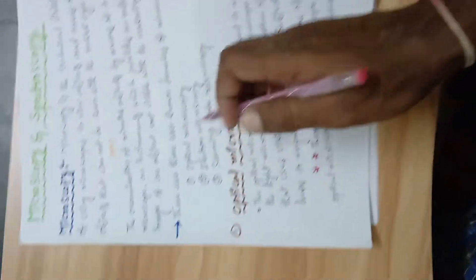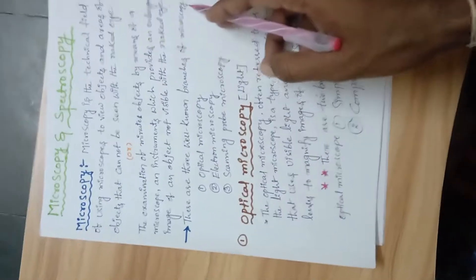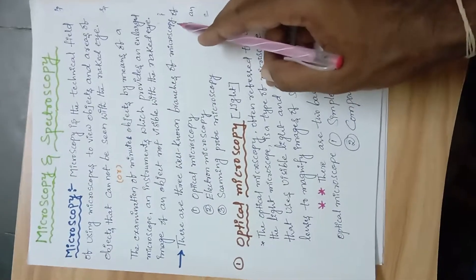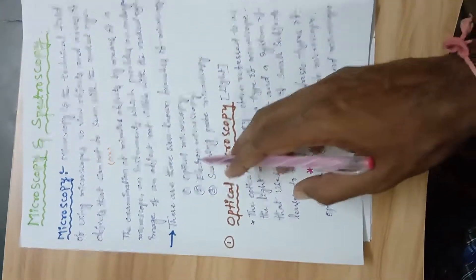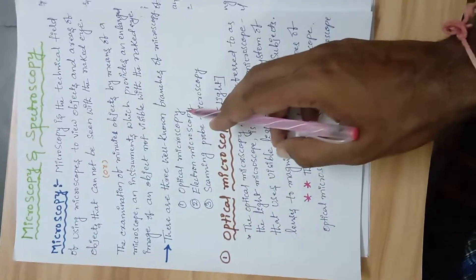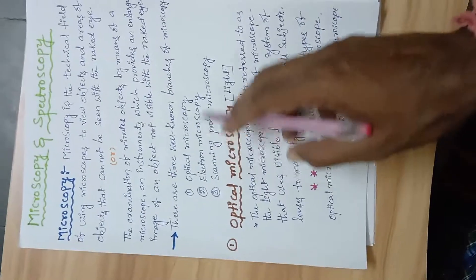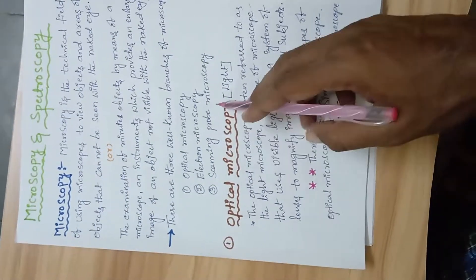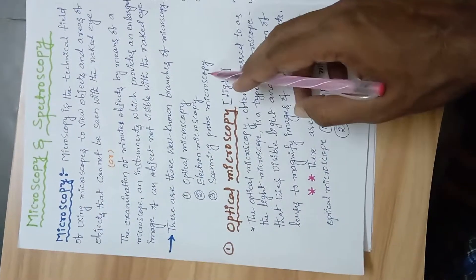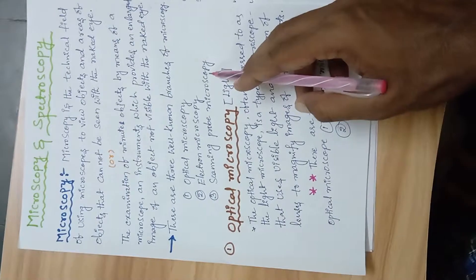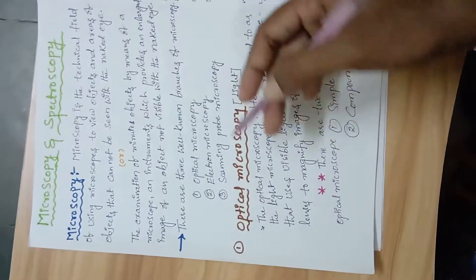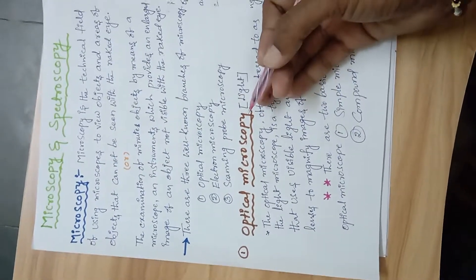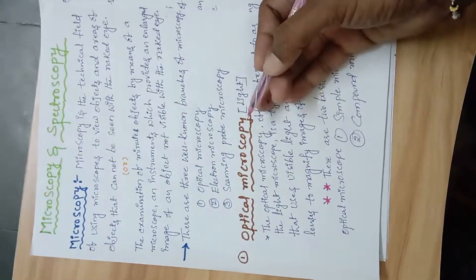There are three well-known branches of microscopy: the first is optical microscopy, the second is electron microscopy, and the third is scanning probe microscopy.